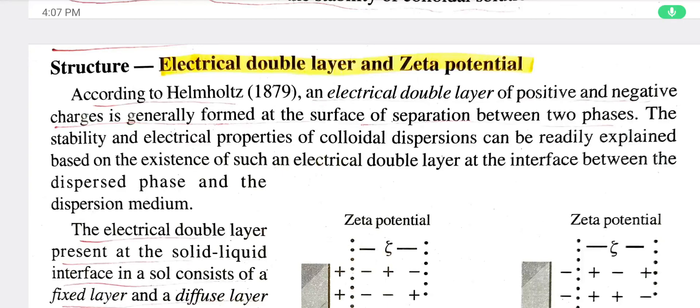Now we are going to look at the Brownian motion. Now we are going to look at the electrical double layer and the zeta potential. The zeta potential is important in this section.